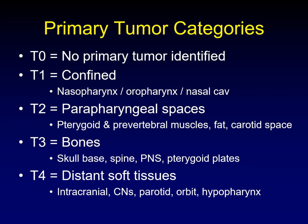T4 disease involves distant soft tissues — by distant, I mean intracranial. If you go all the way through the clivus into the dura of the posterior fossa, that's intracranial spread. If there is perineural spread along a cranial nerve, involvement of the parotid, the orbit, or the hypopharynx — all T4. Notice that we allow the oropharynx at T1, but as soon as you get down to the hypopharynx, that's T4 disease.